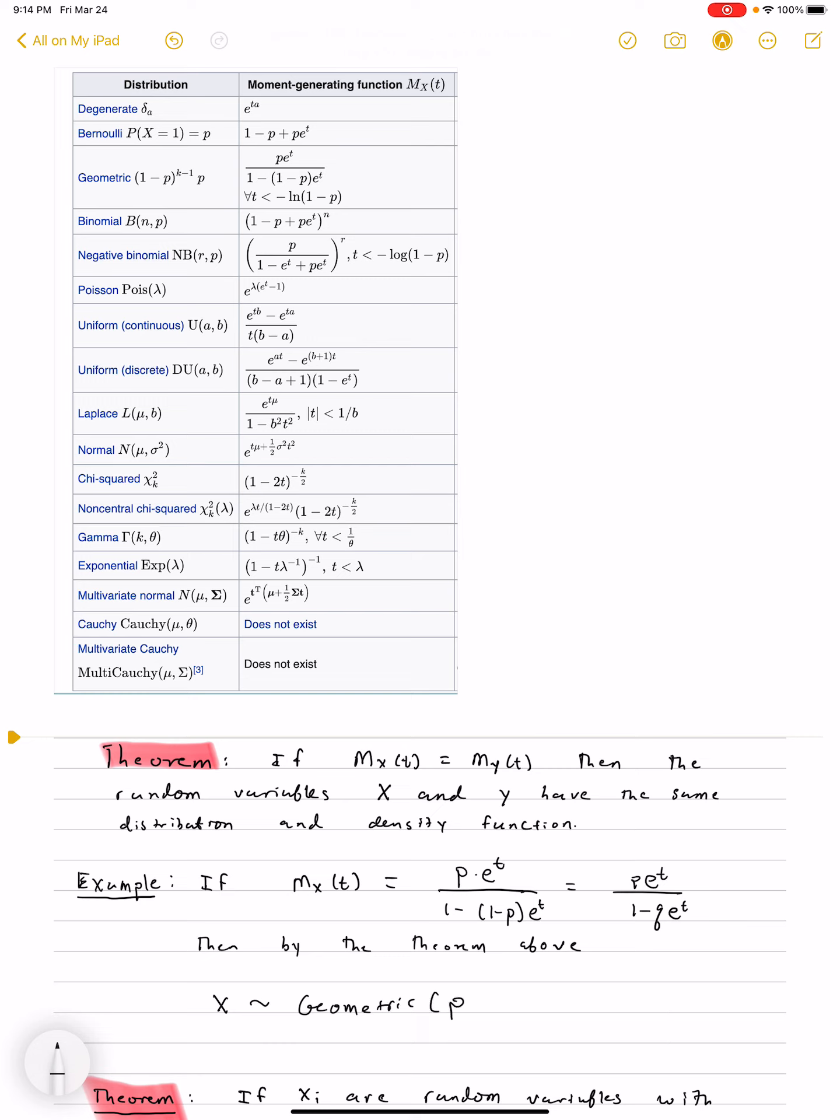The geometric distribution has a parameter of p. This is equivalent to knowing the density function of X. So saying it's geometric with distribution p is the same as saying it has a density function f(x) being (1 minus p)^(x minus 1) times p.